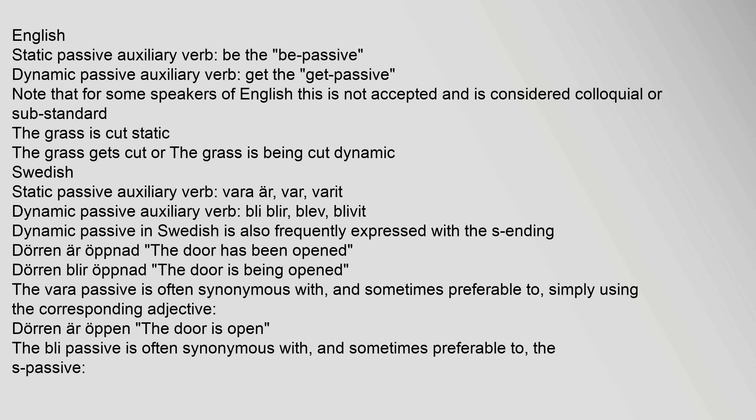In Swedish, the static passive auxiliary verb is "vara" (är, var, varit), while the dynamic passive auxiliary verb is "bli" (blir, blev, blivit). The dynamic passive is also frequently expressed with the "-s" ending. For example: "Dörren är öppnad" (The door has been opened — static) and "Dörren blir öppnad" (The door is being opened — dynamic). The "vara" passive is often synonymous with simply using the corresponding adjective: "Dörren är öppen" (The door is open). The "bli" passive is often synonymous with the "-s" passive: "Dörren öppnas" (The door is opening/being opened).